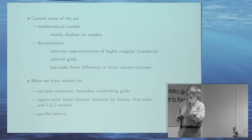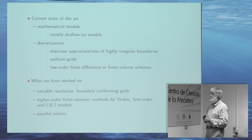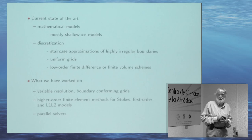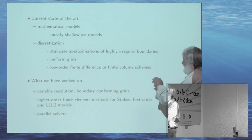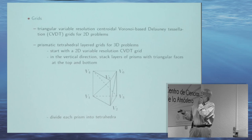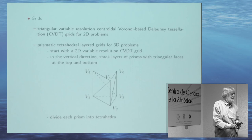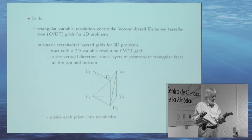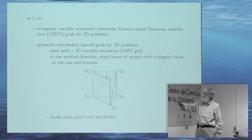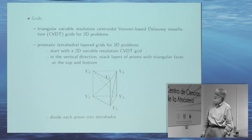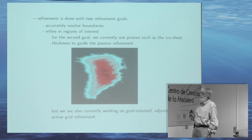Our computational methodology: the current state of the art is mostly shallow ice model. Most climate system models use quasi-uniform rectangular grids with finite difference or finite volume schemes and approximate boundaries by staircases. We work on variable-resolution, boundary-conforming meshes, high-order finite element methods, and parallel solvers. Our grids, like in a lot of climate modeling, are 2D grids layered in the third dimension — we first produce a 2D grid and then drop layers down. We use prismatic elements where the surface grid is triangular, then drop down prisms divided into tetrahedra.